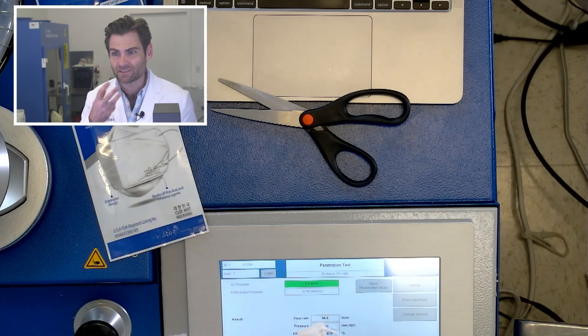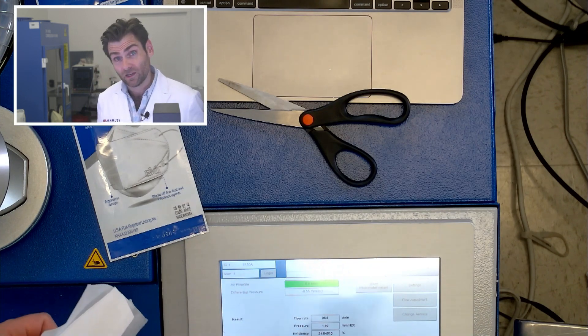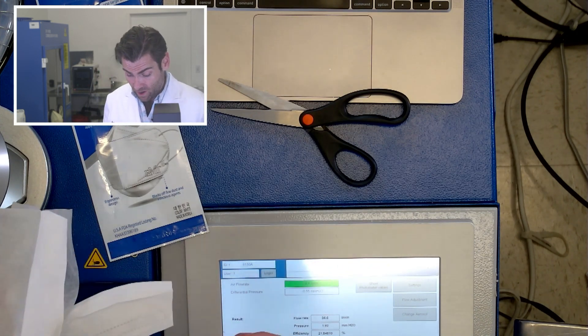Spunbond, so spunbond is the outer layer of a mask, it just stops water, it doesn't block anything, which obviously... this is a fake mask.